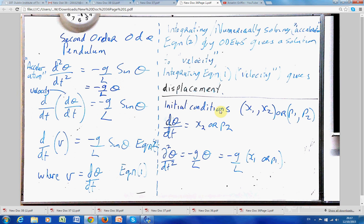We're given two initial conditions, x1, x2, or p1, p2, whatever it is. And we'll look at this in slight more detail in a minute.